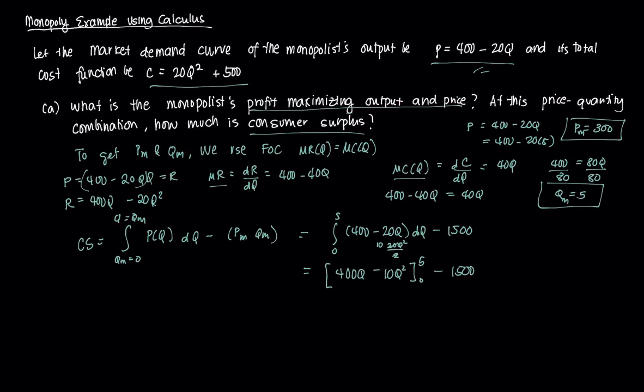We find this will be 400 times 5 minus 10 times 25 minus 1500. If we plugged in 0, that would just be 0. You'll find CSm equals 2000 - 250 - 1500, therefore your consumer surplus under a monopolist equals 250. Bear that in mind, we have that number.